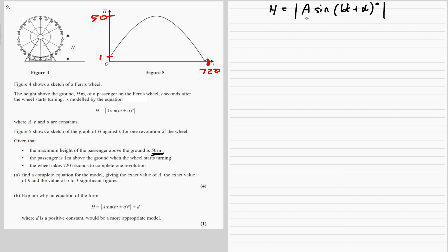So that will be our A. Sine usually goes between one and minus one, so if it goes up to 50, it must be multiplied by 50. So A must be 50.